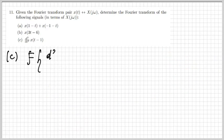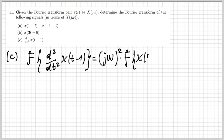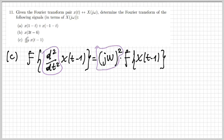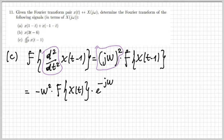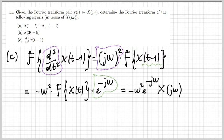Let's move on to part three. In this case I have a double derivative — a second derivative of x of t minus 1. I know that differentiation in the time domain corresponds to a product by jω, and in this case I have a double one, so it's a product by (jω)², which gives minus ω². So what I get is minus ω² times the Fourier transform of x of t minus 1, and I know that a shift in time is a multiplication by a complex exponential. The result is minus ω² · e^{-jω} · X(jω). Well done.